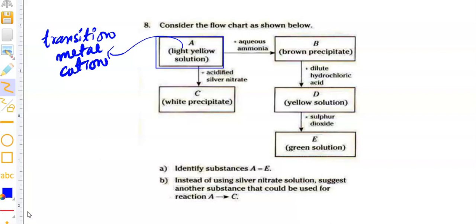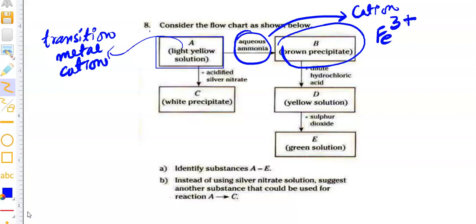Now, the second hint is aqueous ammonia. Aqueous ammonia is used to identify cations and this brown precipitate is another hint for identifying solution B. Brown precipitate indicates that if we add any solution in aqueous ammonia and it gives brown precipitate, they are transition metal cation and brown indicates that it contains Fe³⁺ iron. So we identify the first part of the yellow solution. Yellow solution is yellow due to the presence of Fe³⁺ iron.